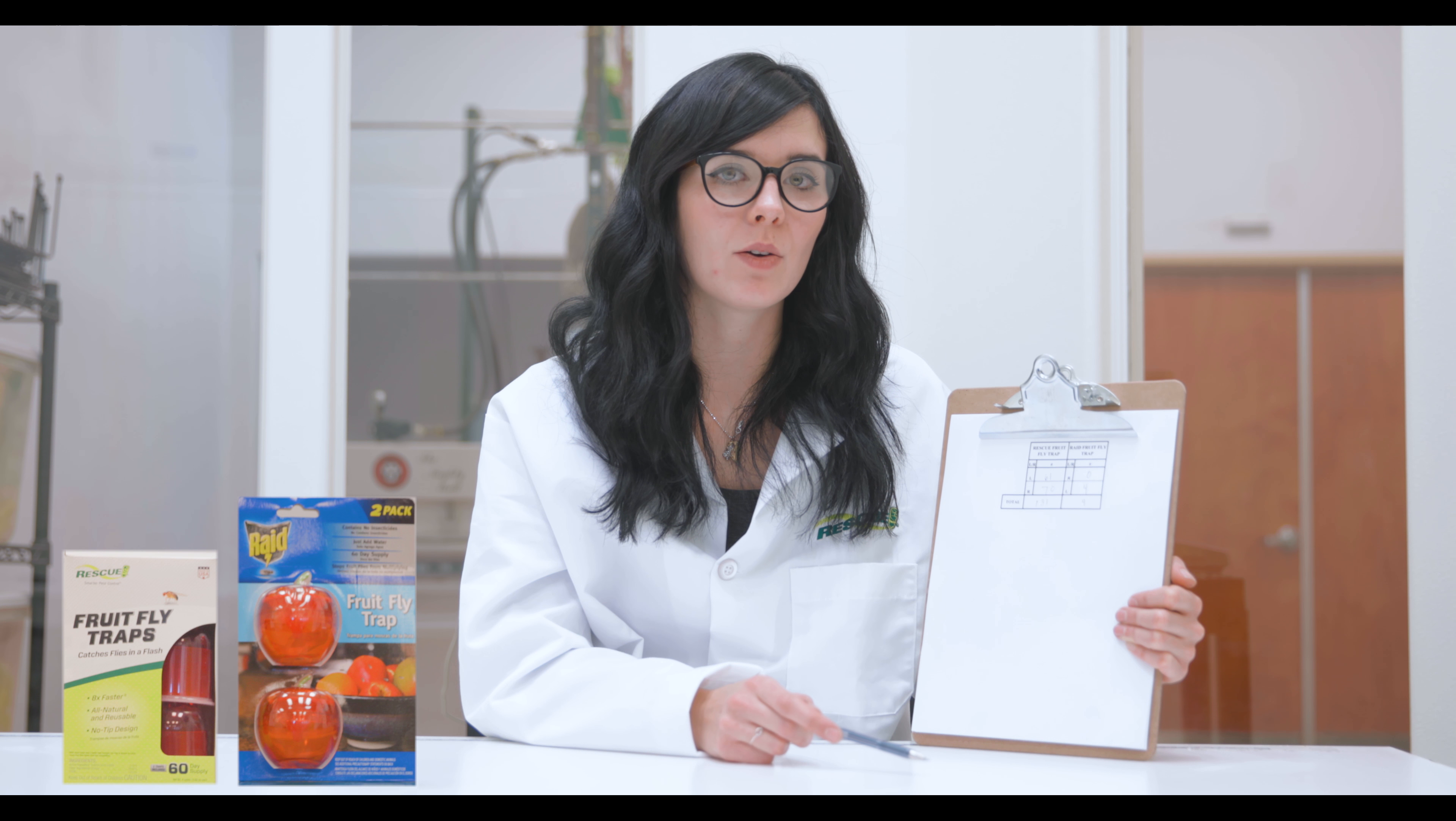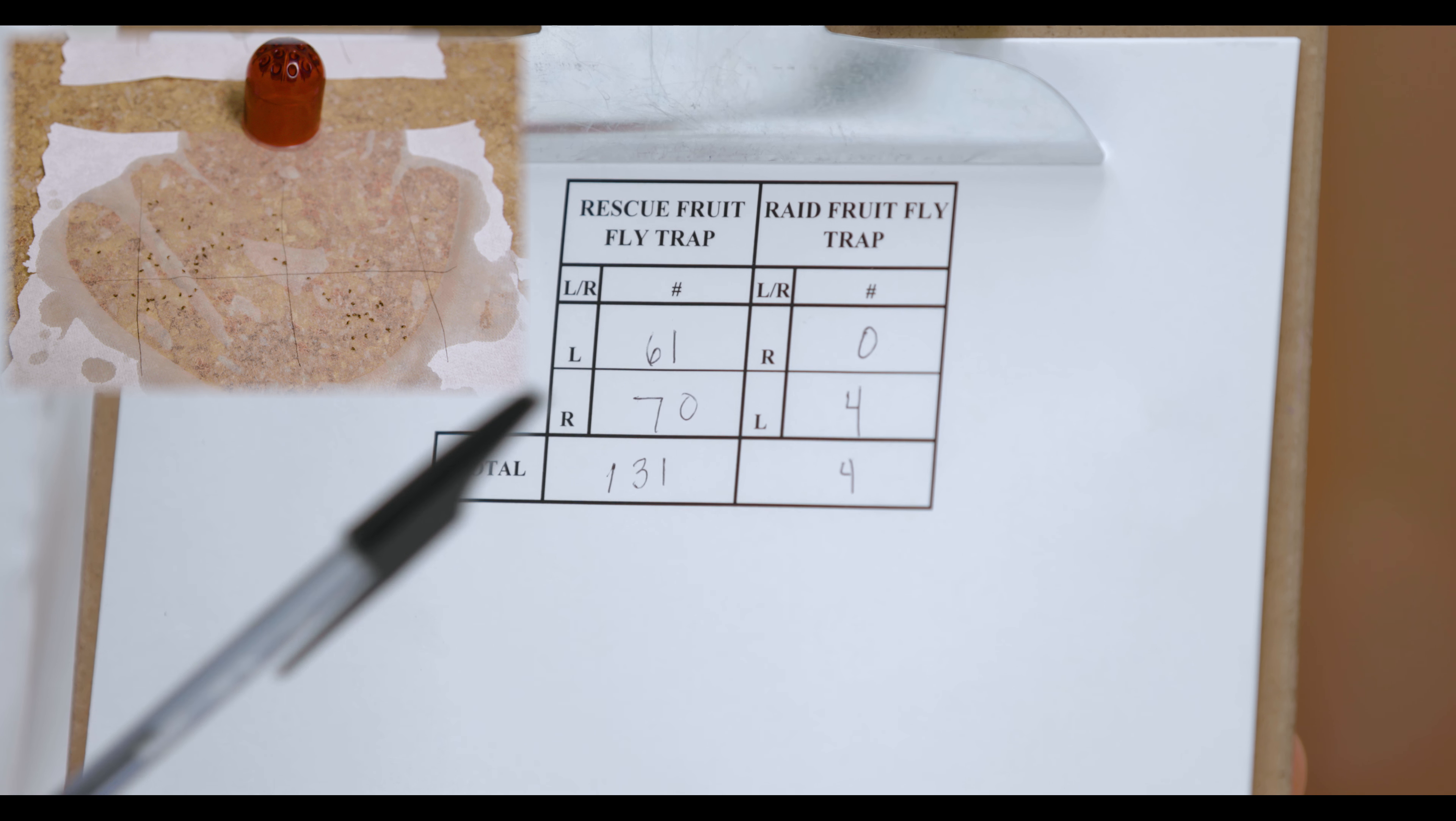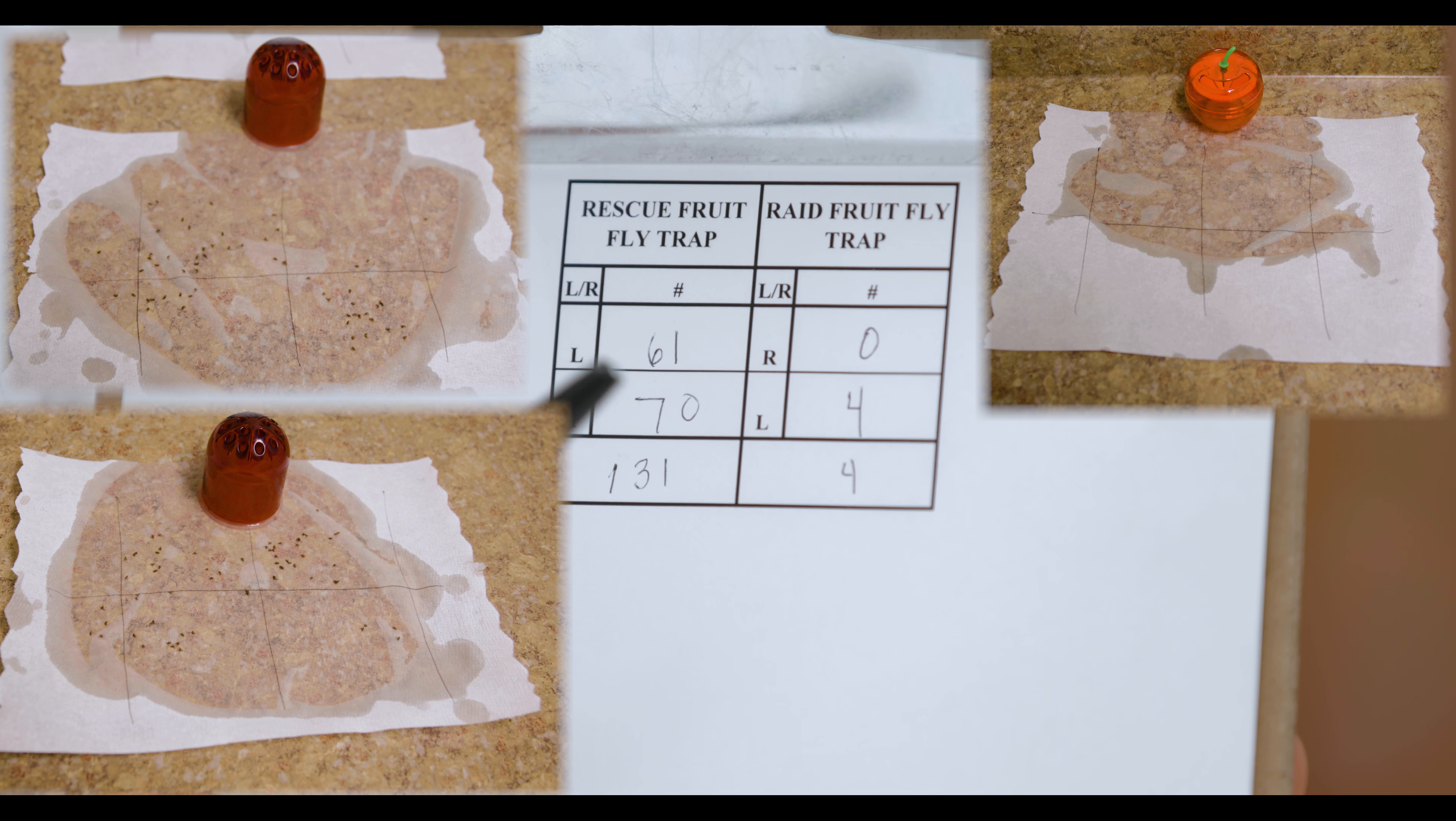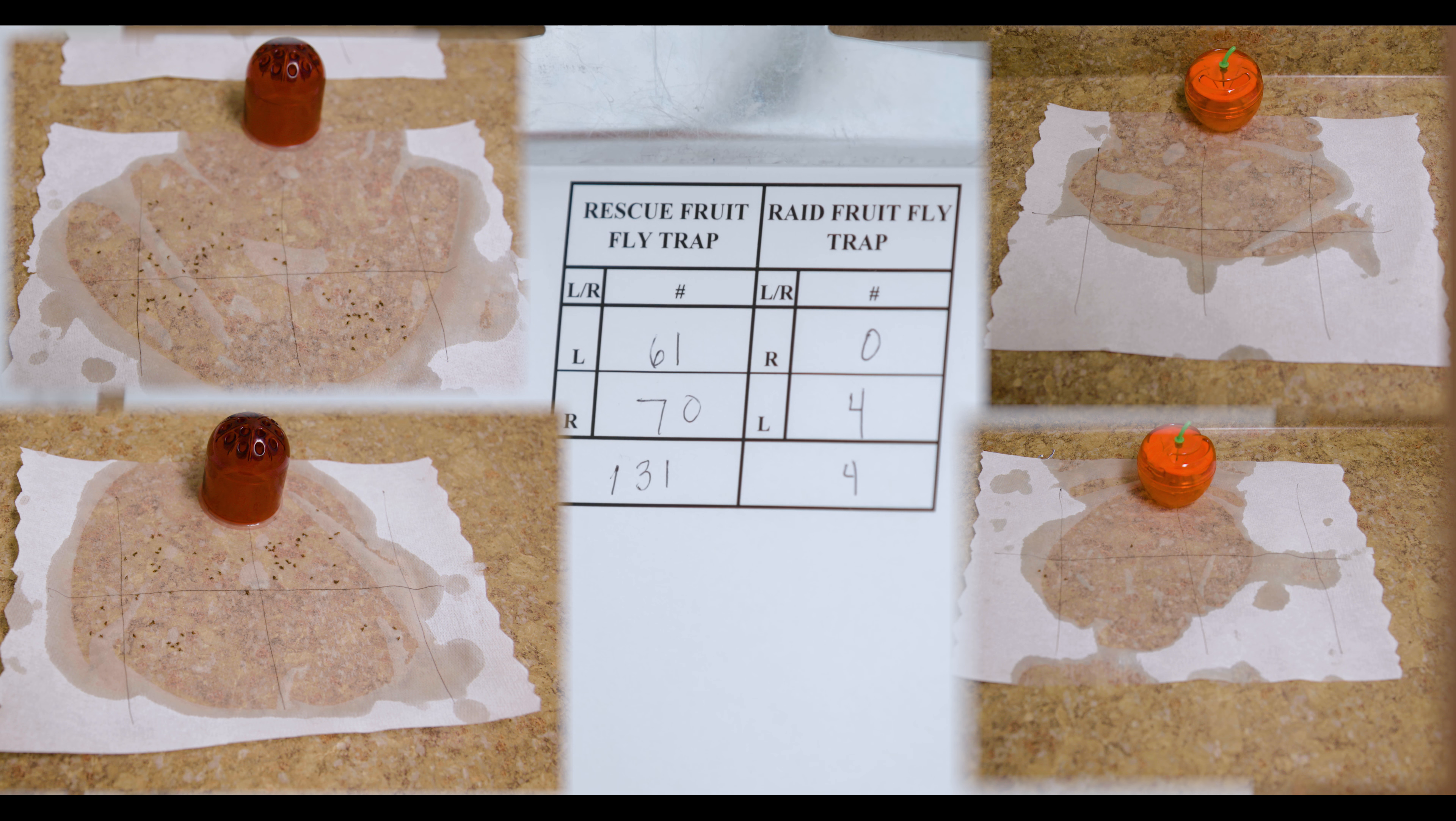After 20 minutes, the Rescue fruit fly trap caught 61 fruit flies and the Raid fruit fly trap caught zero. In the second replicate, the Rescue fruit fly trap caught 70 and the Raid trap caught four, for a total of 131 fruit flies in the Rescue trap and four in the Raid trap. Proving that Rescue is the superior product.